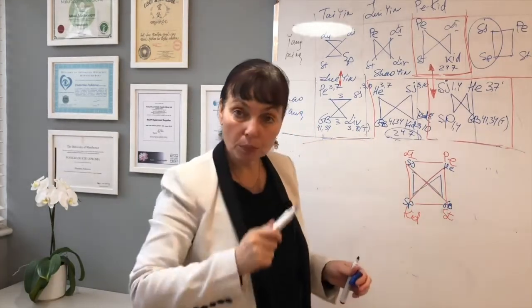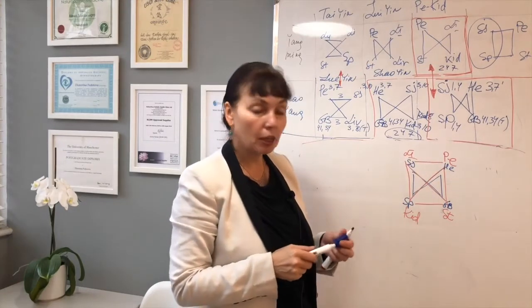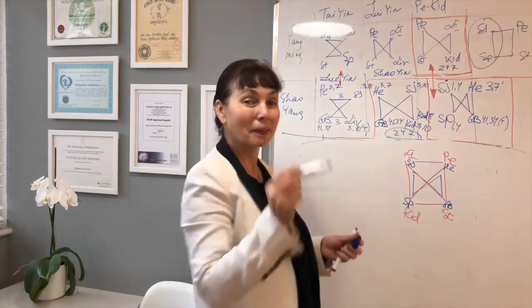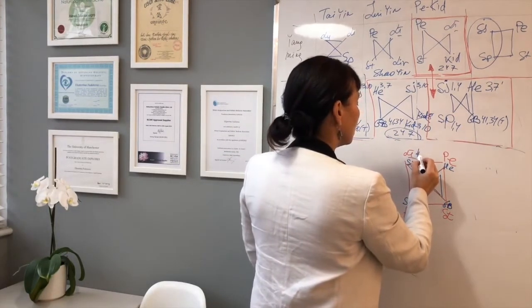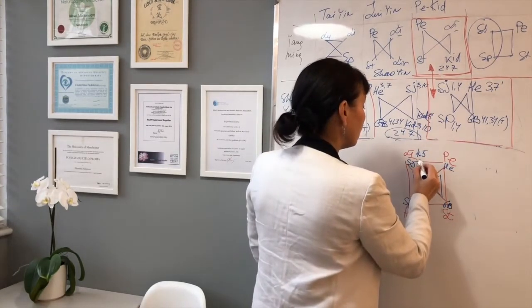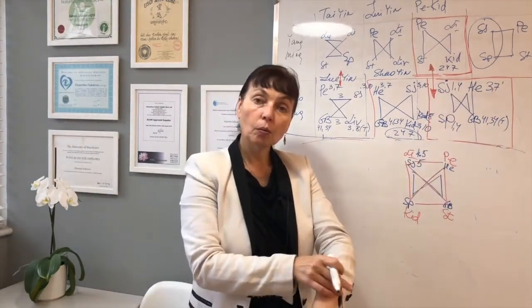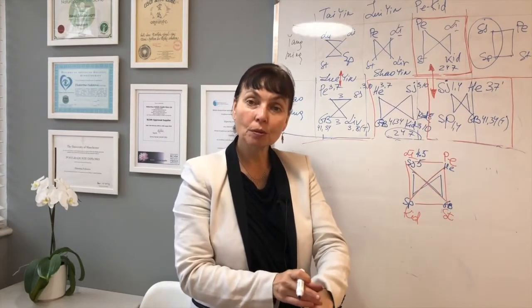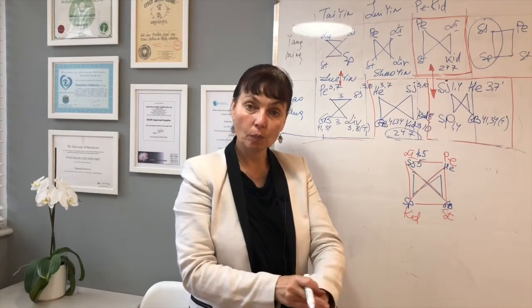Now we have to choose the points. Which is the best point on large intestine meridian for any gynecological disorders? Of course, Hegu, which is 4.5. Sanjiao 5. Points on lower arm, they relate to gynecological zone, to the womb, to the ovaries.